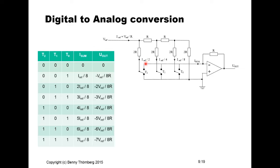We can now set up the corresponding table for the different binary values. We have 8 different binary values. If we only activate the least significant bit, we have a current of I_ref divided by 8. If only the second significant bit, we have 2 times I_ref divided by 8. If only the most significant bit, we have 4 times I_ref divided by 8. Summing the currents altogether gives 8 different output levels according to the input binary code.